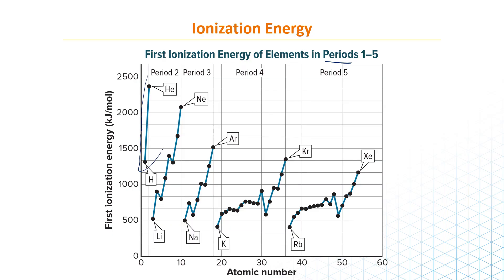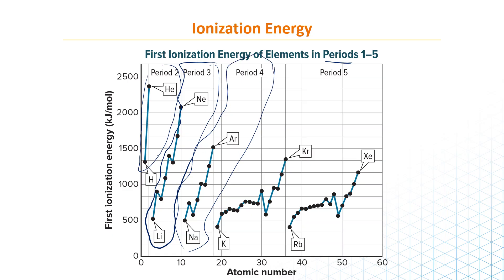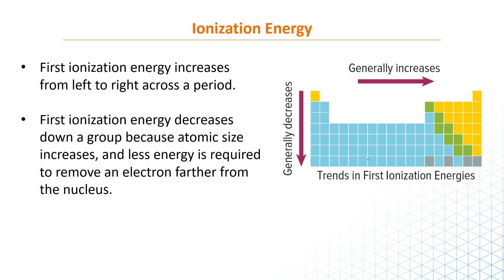These are the elements in period two, these are the elements in period three, and these are the elements in period four. As you can see, if you go across a period from left to right, the ionization energy is increasing — it's going up. So the first ionization energy increases from left to right. When you go from up to down, the first ionization energy decreases.